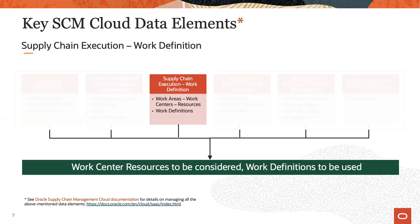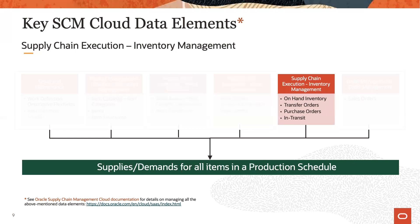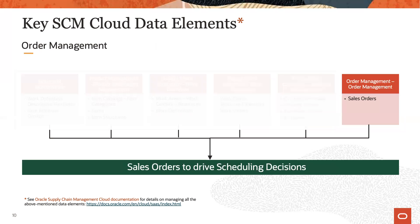From supply chain execution work definition, work definitions and associated resources are read into production scheduling. From supply chain execution work execution, the resource capacity and resource availability are brought into production scheduling where they serve as constraints, and the work orders themselves that must be scheduled are read in as well. From inventory management, various supplies and demands are brought into production scheduling to ensure a consistent inventory picture. And finally, from order management, sales orders are brought into production scheduling where they influence when the supply chain work orders will be scheduled.